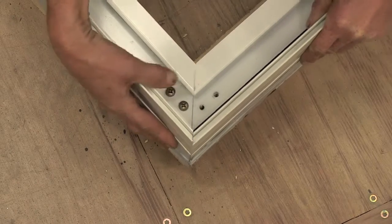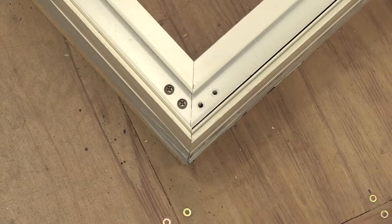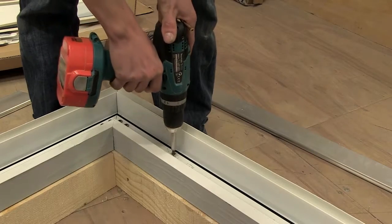Slide the ring beam bracket into the channel on the adjoining ring beam and push together. Fix the ring beam screws into the pre-drilled holes. Fix down the ring beam to the kerb.